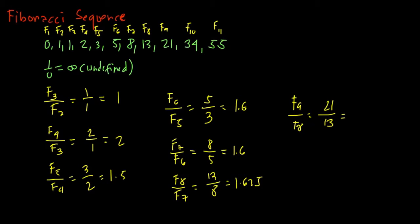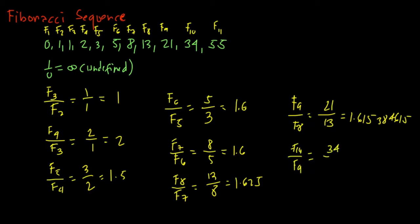Continuing to f10 over f9, we have 34 over 21. So 34 divided by 21 gives us approximately 1.61904761. As you can see, the ratio of consecutive Fibonacci numbers is approaching a certain number.